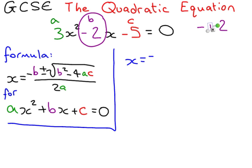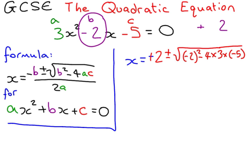Okay? So, that's going to be 2. Plus or minus the square root of minus 2 squared. Do not put minus and then 2 squared in your calculator, because that will give you the wrong answer. Minus 4 times by 3 times by minus 5. Can you see, I've got brackets to make sure that the minus is with the 5, all divided by 2 times by 3, which is 6.